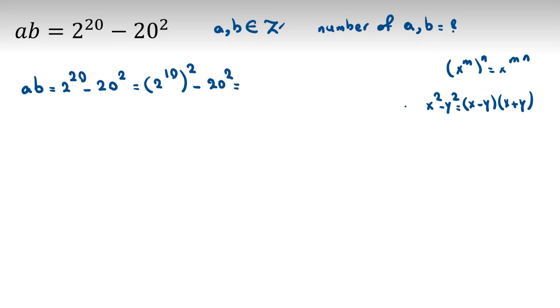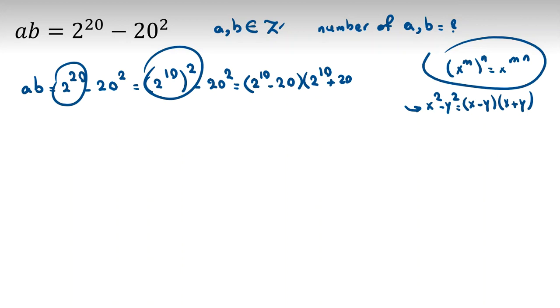It's 2 to the 10 squared minus 20 squared. If we use this identity, it will be 2 to the 10 minus 20 times 2 to the 10 plus 20. I understood 2 to the 20 is this because of using this.